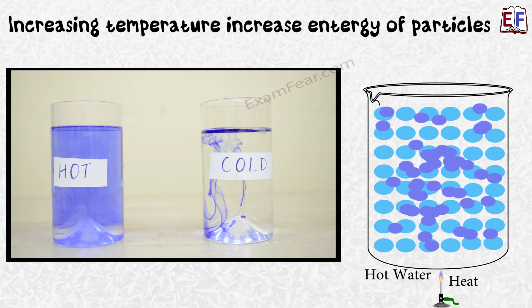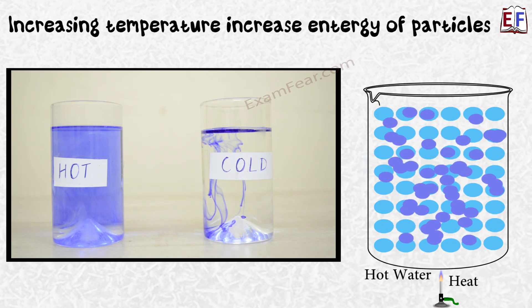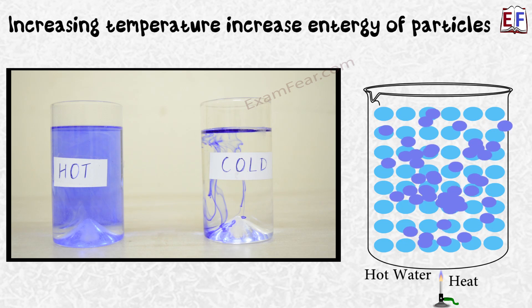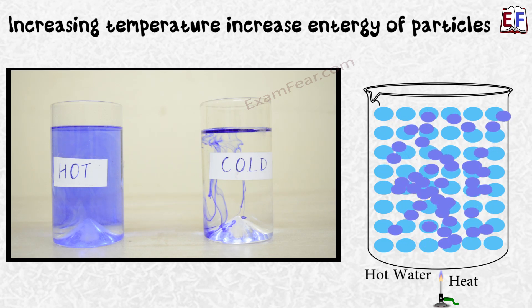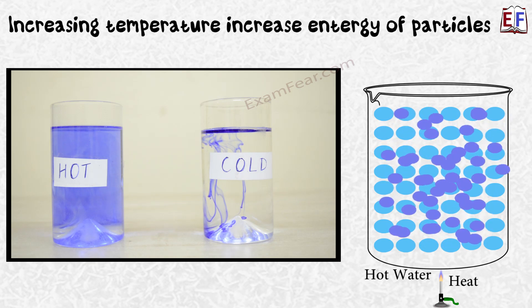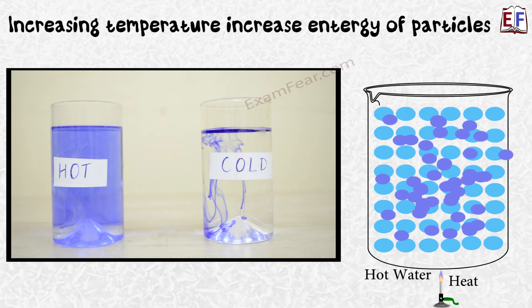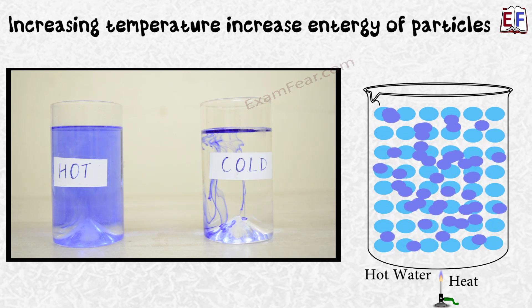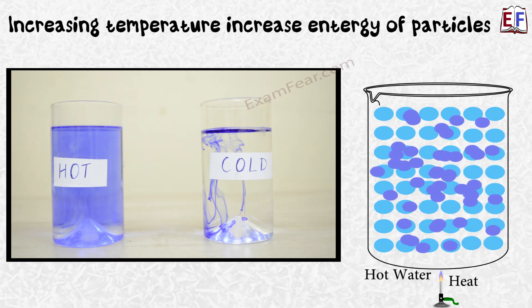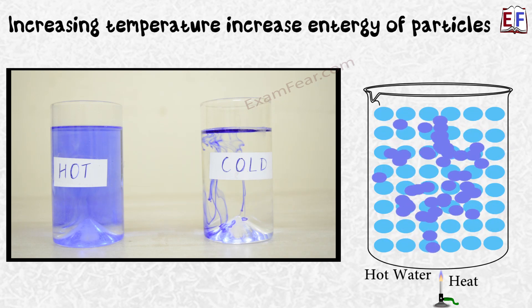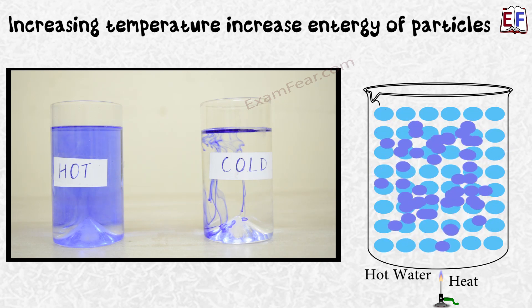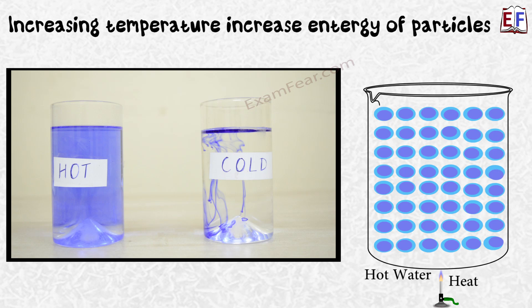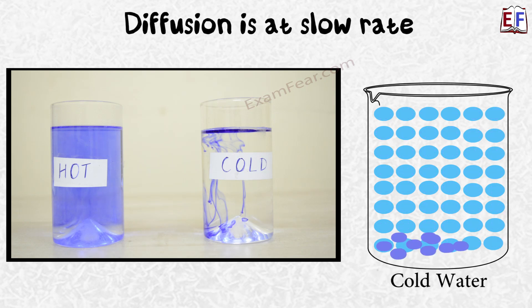Therefore, the rate of diffusion is more. And as a result, as you see in the hot glass of water by now, we see a uniform blue solution because the diffusion has taken place and the ink is dissolved completely in water.